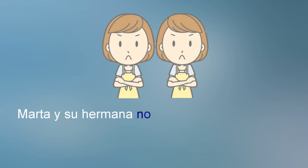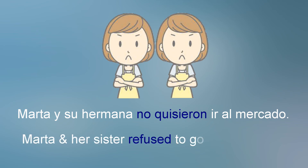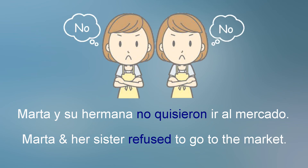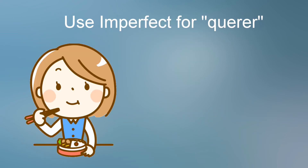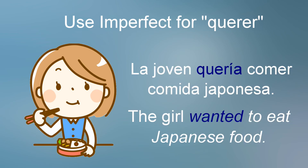However, Marta y su hermana no quisieron ir al mercado translates as 'Marta and her sister refused to go to the market.' How is that possible? The interpretation comes from the idea that not only did they not want to go, but they didn't. Therefore, 'refused' reflects the stronger use of the preterite. For intermediate learners, my observation is that you'll do best to use querer in the imperfect tense rather than the preterite — that skill will come with more practice.